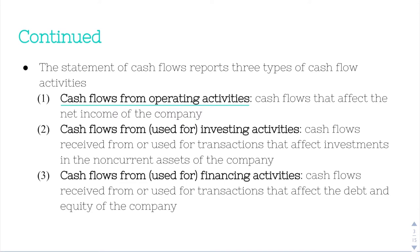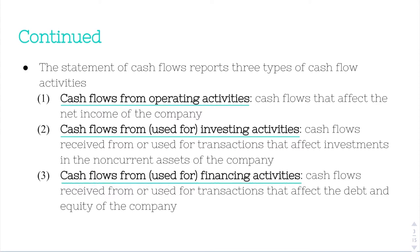The next kind is cash flows from or used for investing activities. These are cash flows received from or used for transactions that affect investments in the non-current assets of a company. And the third kind is cash flows from or used for financing activities — cash flows received from or used for transactions that affect the debt and equity of a company.